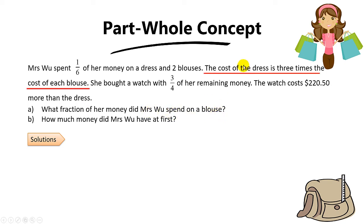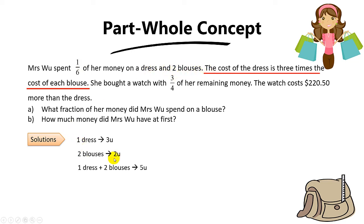Since the cost of the dress is 3 times the cost of each blouse, we let each blouse be 1 unit, so the dress is 3 units. Two blouses will be 2 units. The question says Mrs Wu spent 1 out of 6 of her money on 1 dress and 2 blouses. So 1 dress plus 2 blouses equals 3 units plus 2 units, which is 5 units. These 5 units represent 1 out of 6 of her money.